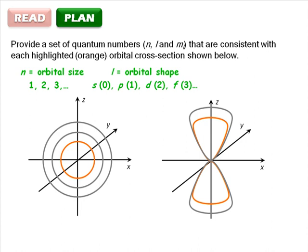These letters correspond to the numbers 0, 1, 2, or 3 respectively. L can range from 0 to n minus 1 for a given orbital.